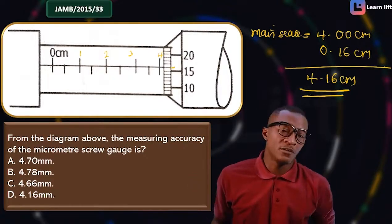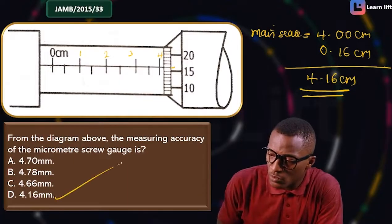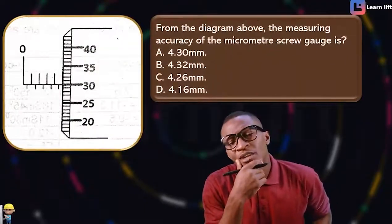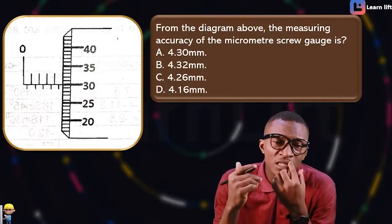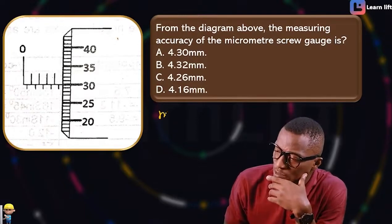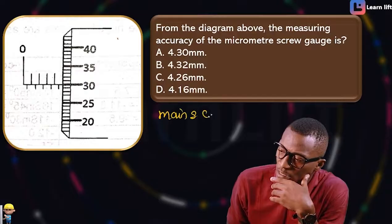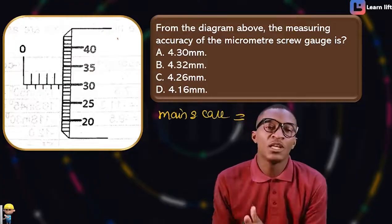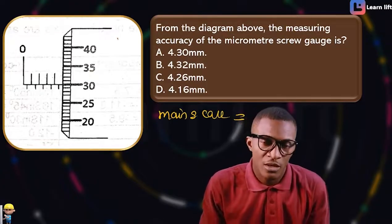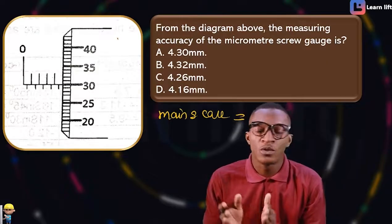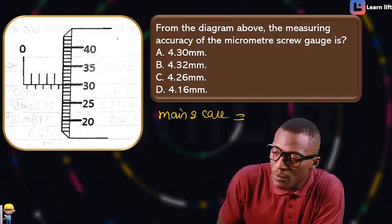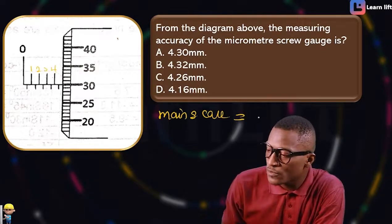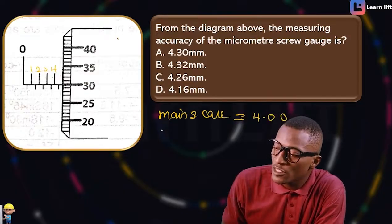Very simple! Add the main scale and the screw scale and you get the reading. Let's try another diagram. Post your attempt first. For the main scale: 0, 1, 2, 3, 4 — so the main scale is 4.00. Let's now check the screw scale.